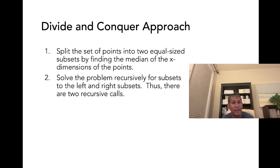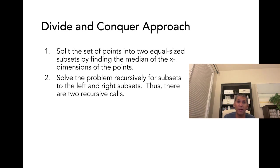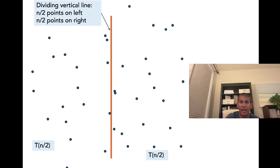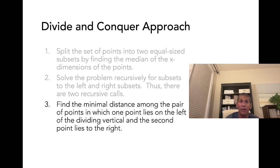We want to use the divide and conquer approach. Divide and conquer begins by dividing the input into smaller parts. Here we divide the set of points into two equal subsets by taking the median of the x-dimension — essentially looking at points from left to right, taking the first half and the second half. Then we solve this problem recursively with a left-hand side recursion and a right-hand side recursion, giving us two recursive calls.